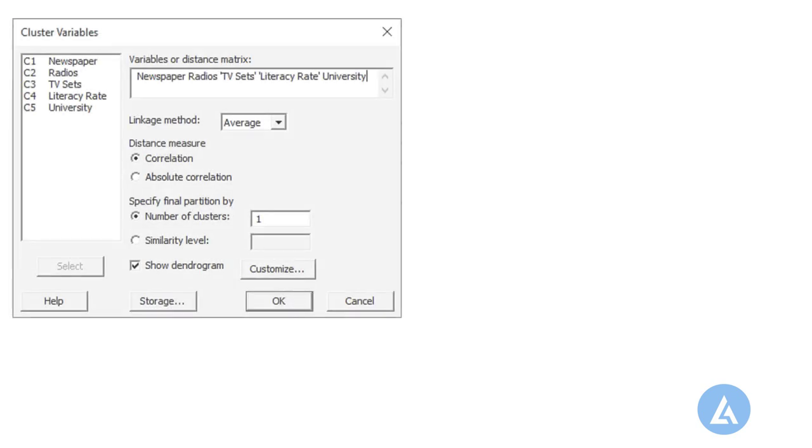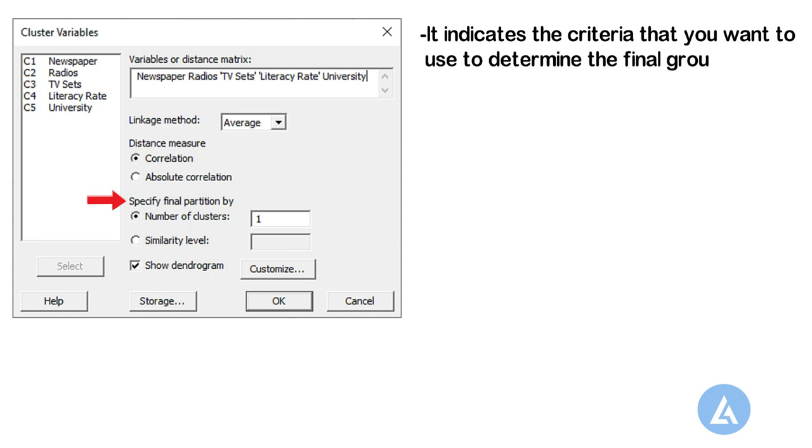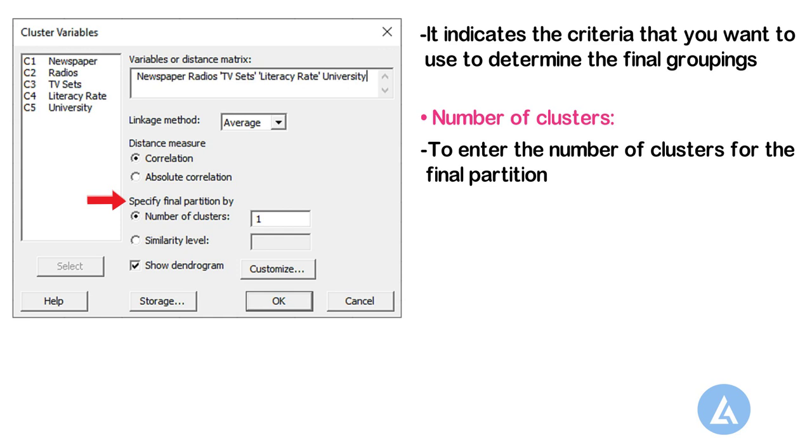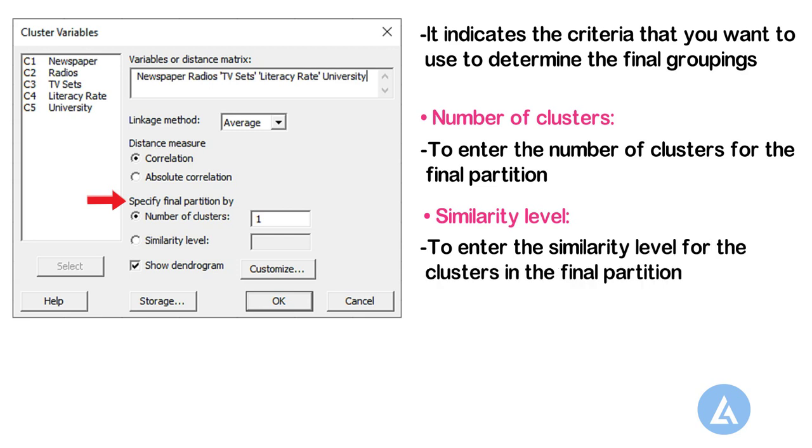In Specify Final Partition By, keep all the default settings as it is. It indicates the criteria that you want to use to determine the final groupings. Select the option of Number of Clusters to enter the number of clusters for the final partition. And select the option of Similarity Level to enter the similarity level for the clusters in the final partition.